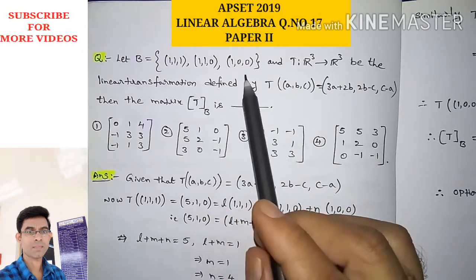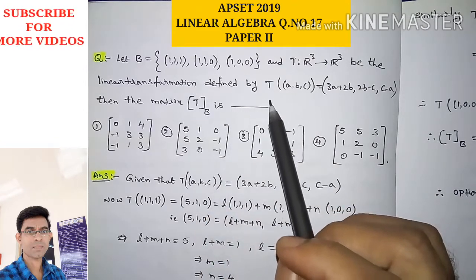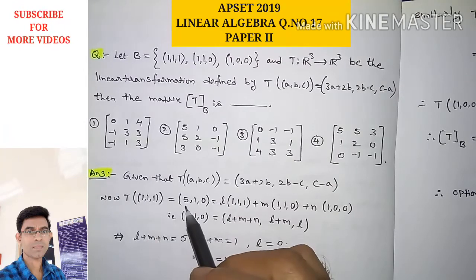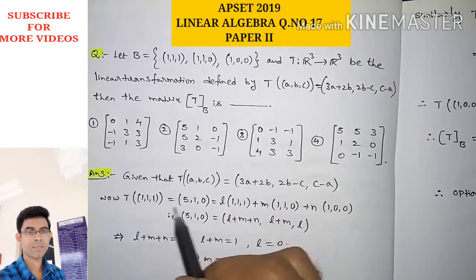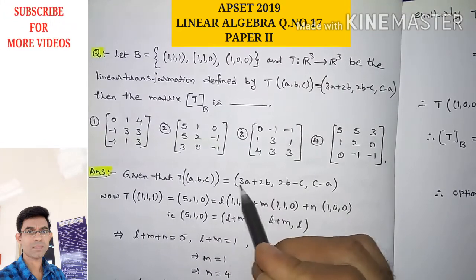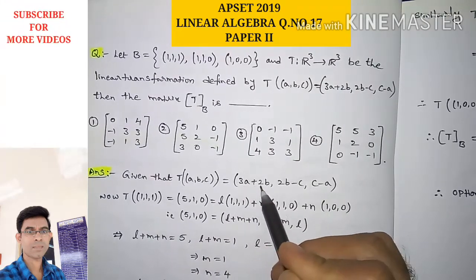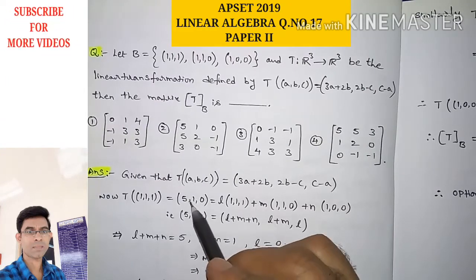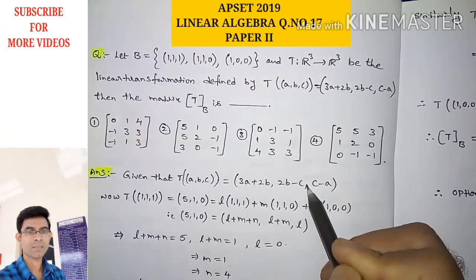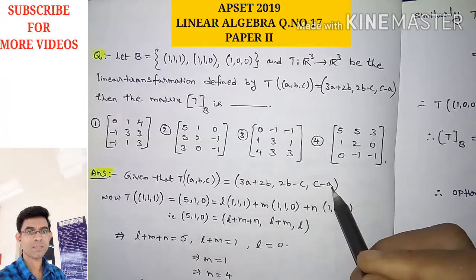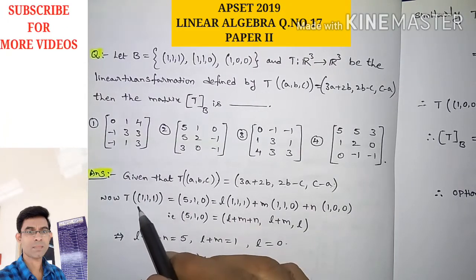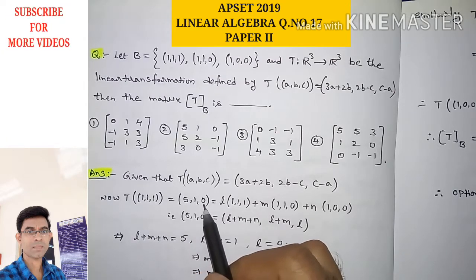We find the images of these three basis vectors under the transformation T. T(1,1,1) = (5,1,0). This is obtained by substituting A=1, B=1, C=1 into the transformation: 3+2=5, then 2−1=1, and 1−1=0. So the image of the first basis vector (1,1,1) under T is (5,1,0).